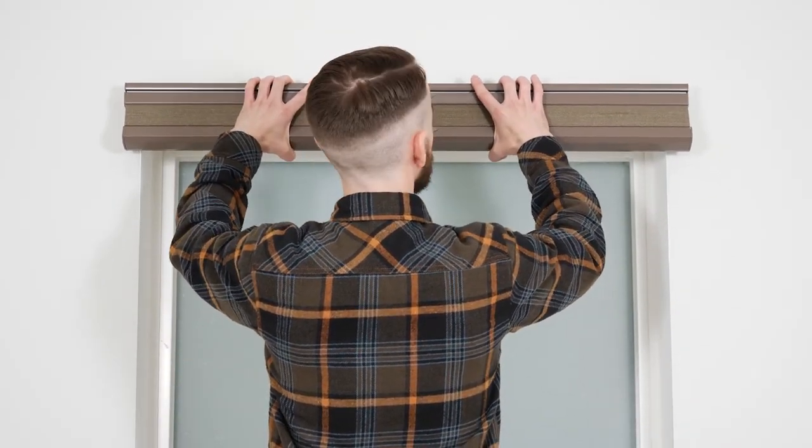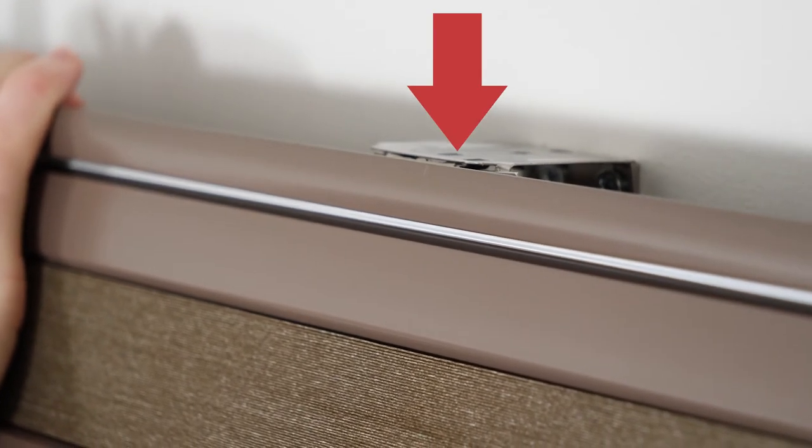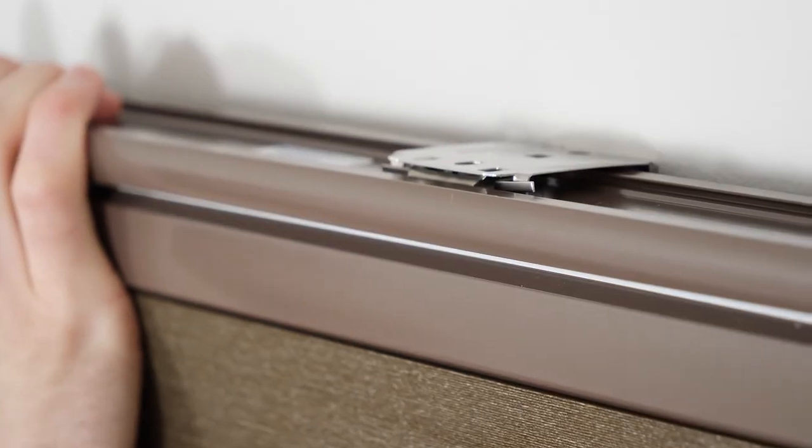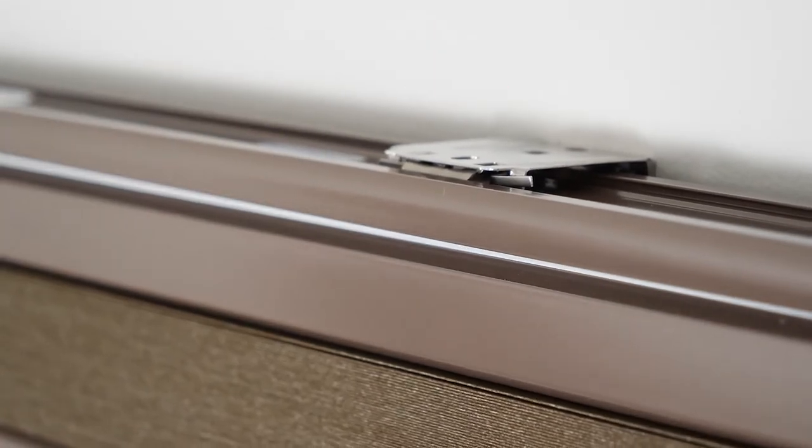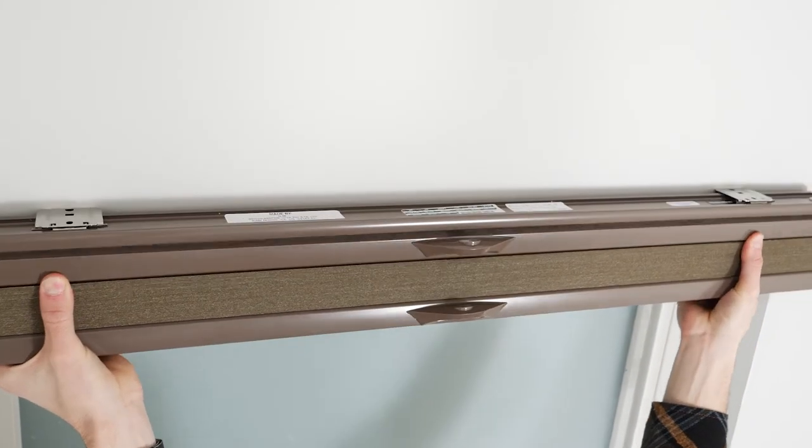With the front of the shade facing you, tilt the headrail slightly backward to angle the front inside lip of it onto the brackets. In the same movement, push the headrail back and upward to snap it into place. You'll hear a sharp click when it is.